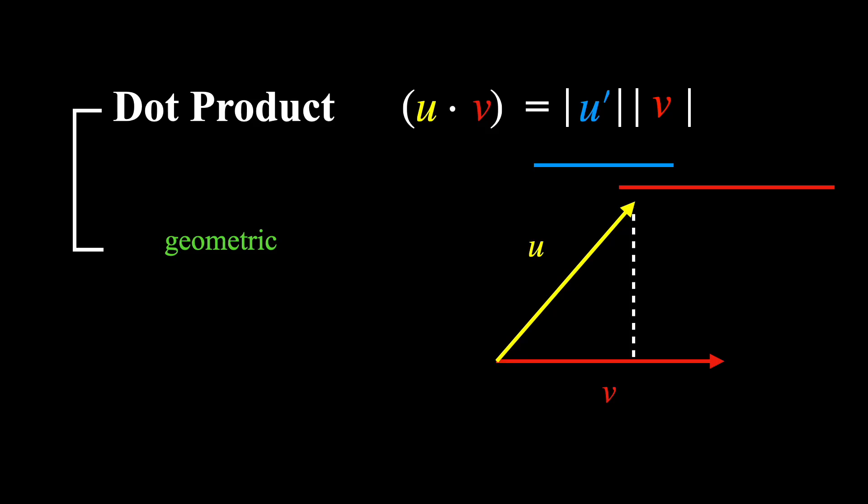And if you use the definition of cosine, you can also rewrite the length of u' in terms of the length of u, which results in u dot v also equaling the length of u times the length of v times cosine theta, where theta is the angle between u and v.